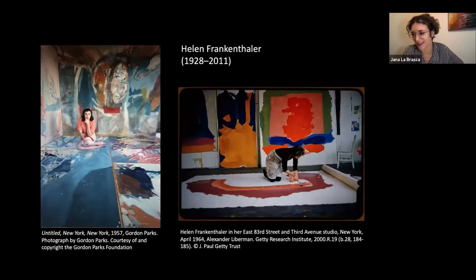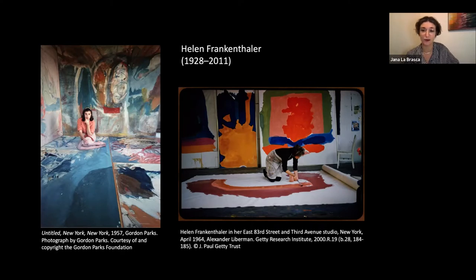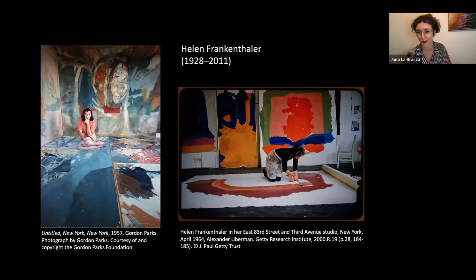So who was Helen Frankenthaler and who was she as a printmaker? She was born in 1928 in New York City. She grew up on the Upper East Side of Manhattan and went to private schools — a very privileged upbringing. She went to the Dalton Academy, where one of her teachers was the Mexican artist Rufino Tamayo. In 1949 she graduated from Bennington College, then moved back to New York and briefly studied painting with Hans Hofmann. Frankenthaler first saw the work of abstract expressionist painter Jackson Pollock when she was in her early 20s at a show at the Betty Parsons Gallery, and later her friend, the art critic Clement Greenberg, brought her to Pollock's studio.